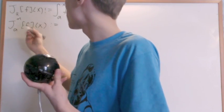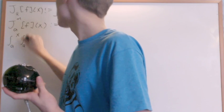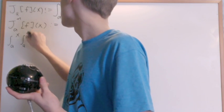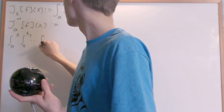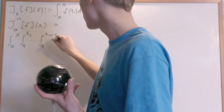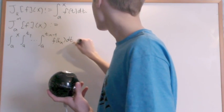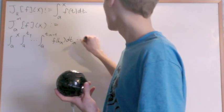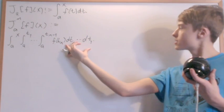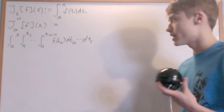Writing out those n integrals: it's going to be the integral from a to x, the integral from a to t1, all the way up until the integral from a to t_{n-1}, of f(t_n) dt_n, all the way down until dt1. So we have n different integrals right here, integrated n times — and we give it this simpler name.